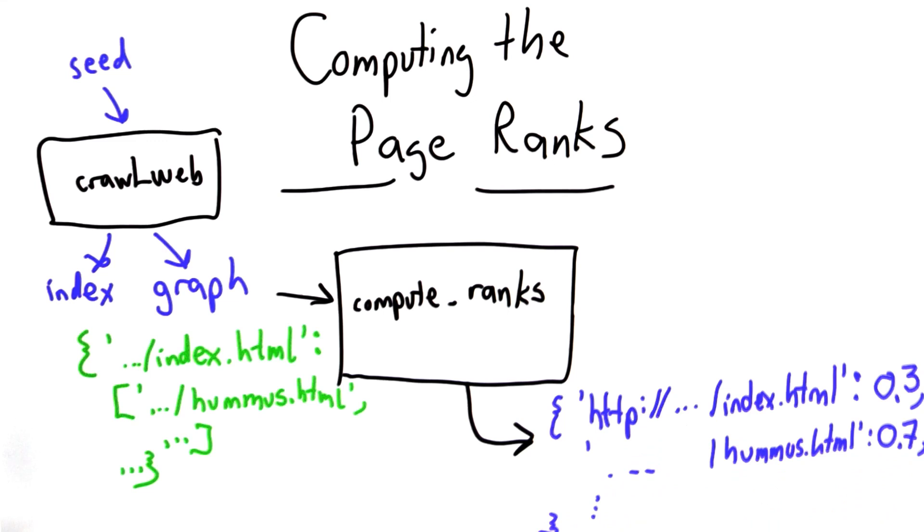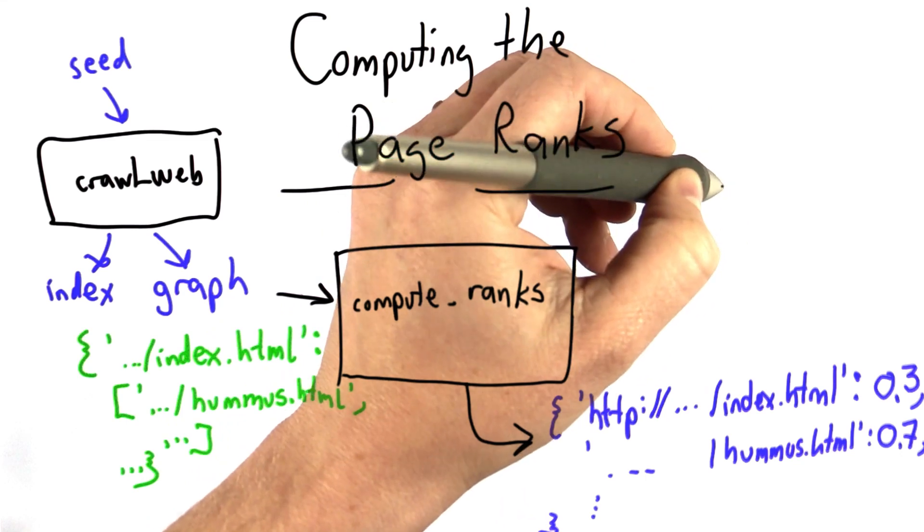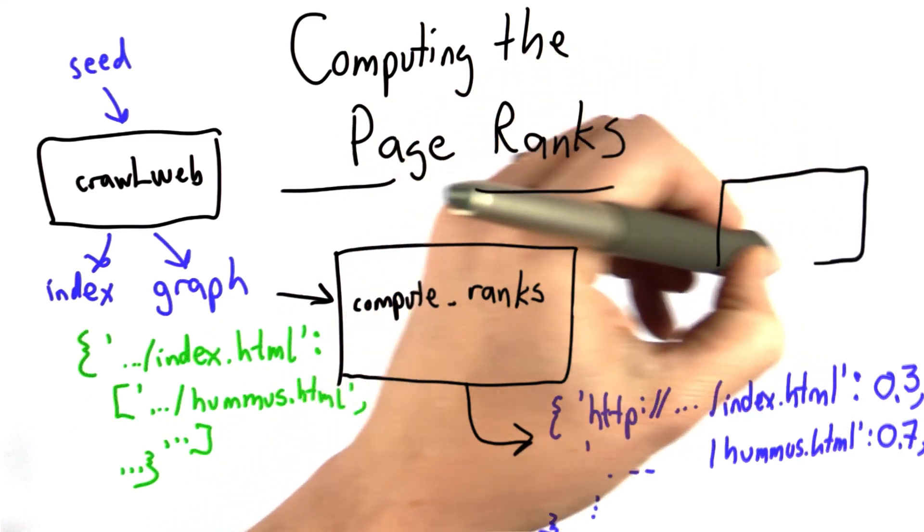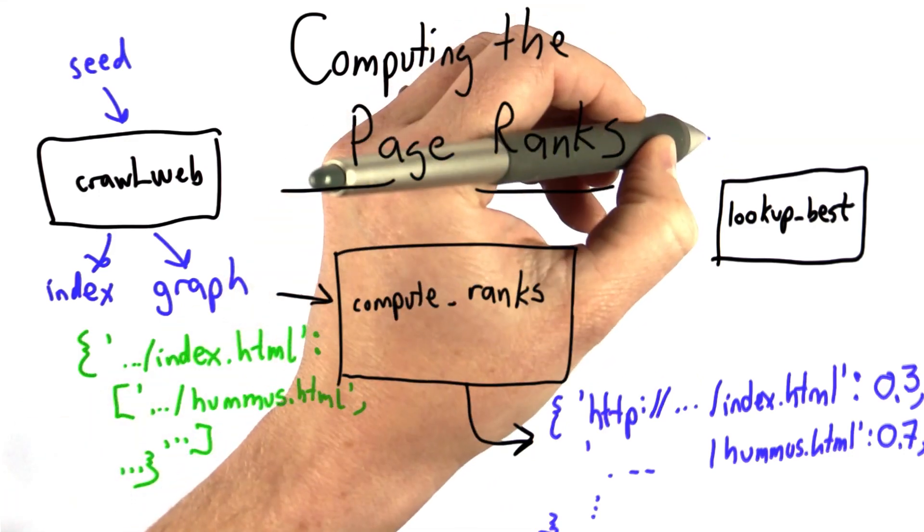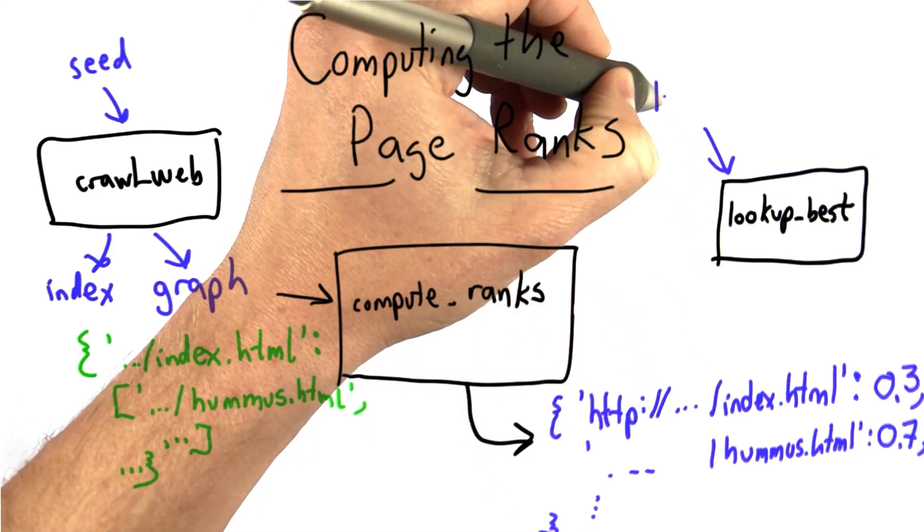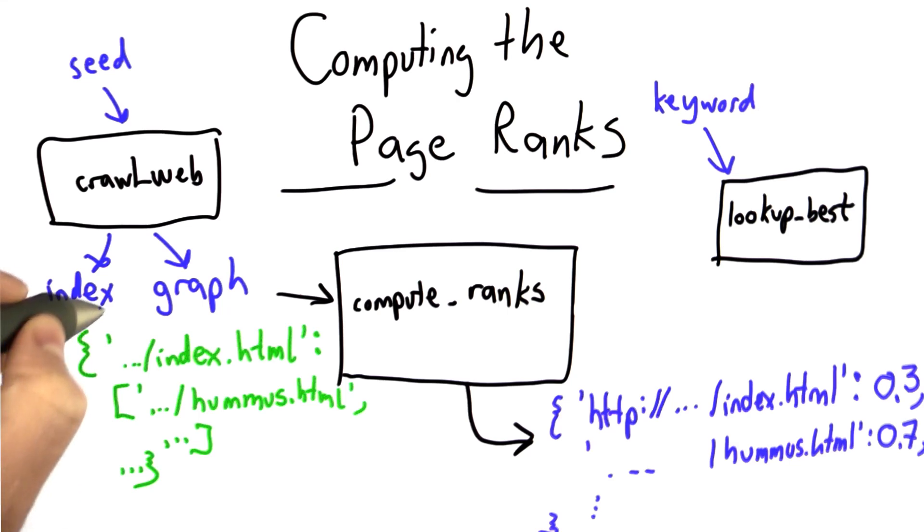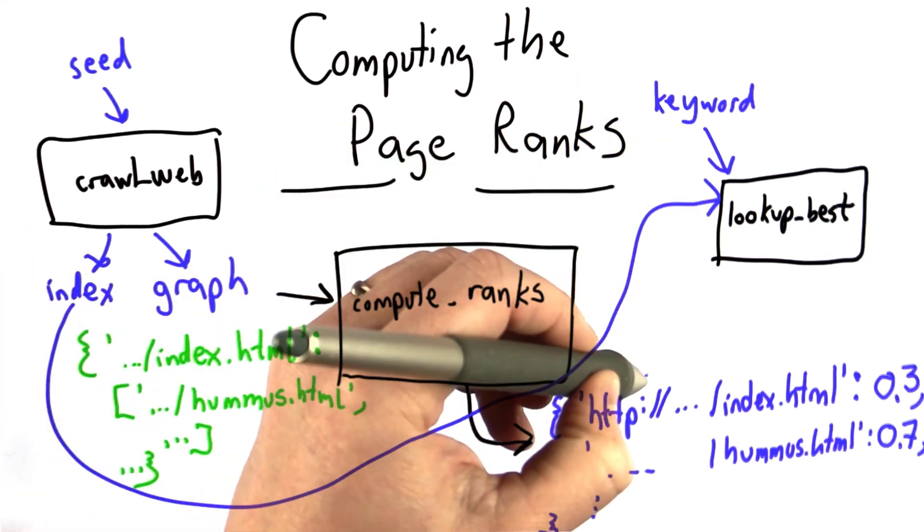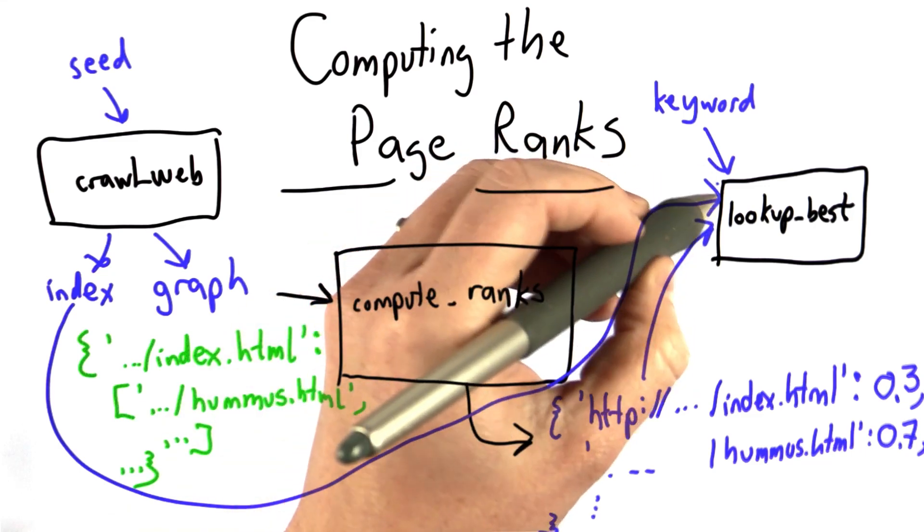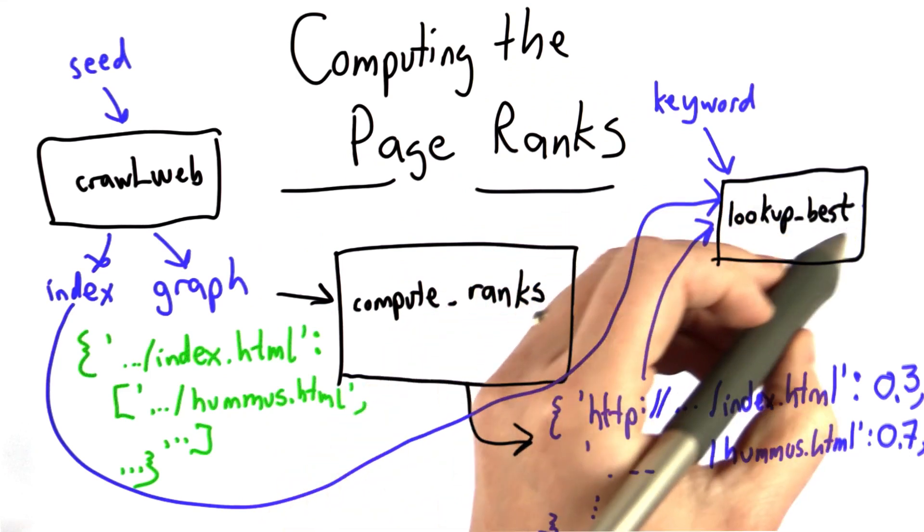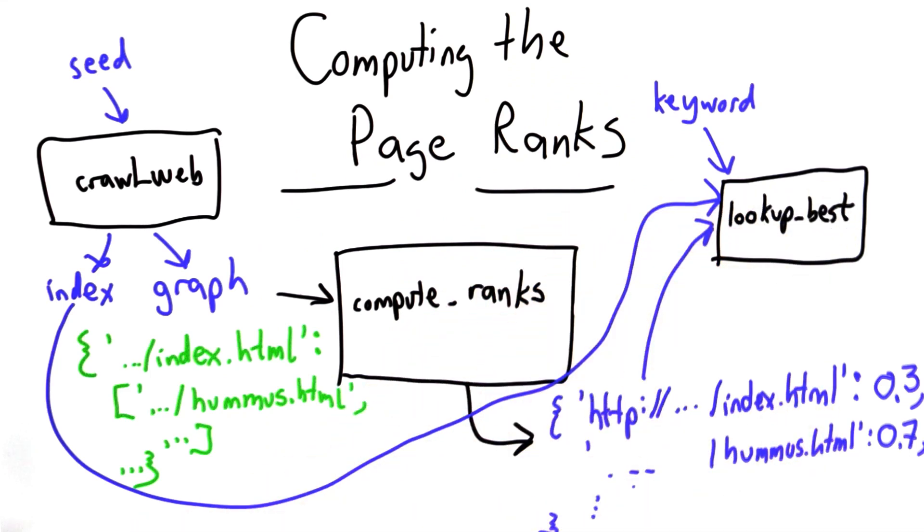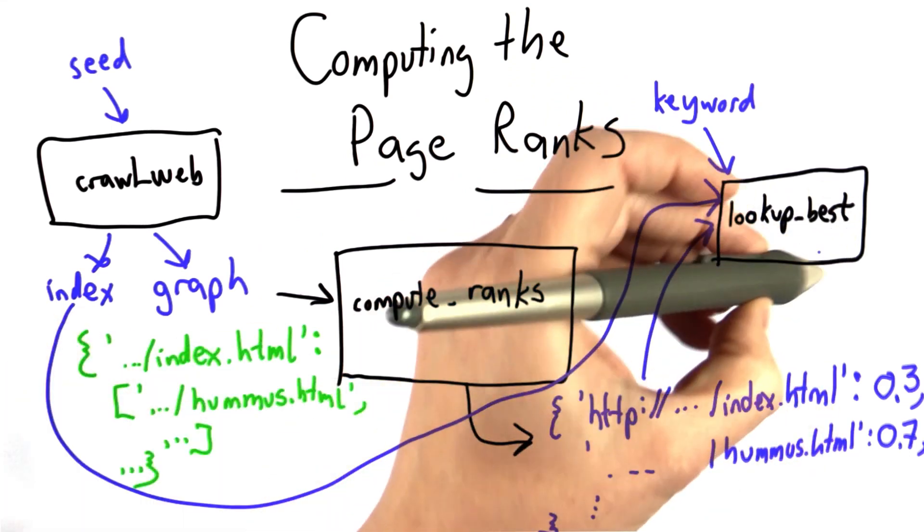And what we're going to do once we have those ranks, and this last part is going to be left as a homework assignment for you. Instead of having just lookup, we're going to have lookup_best. And lookup_best will take three inputs: the keyword we're looking for, the index that came from the crawl, and the ranks. From those three inputs, the index will give us all the pages that contain the keyword. And then what lookup_best will do is use the ranks to find the highest rank page and give that as the output.